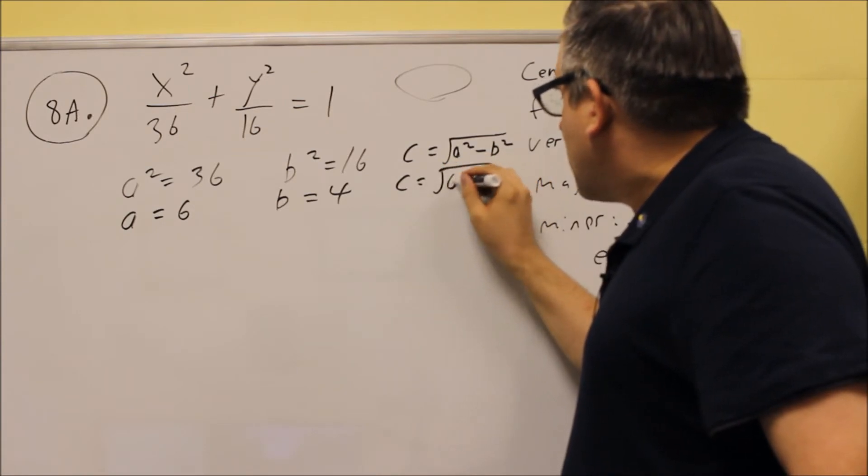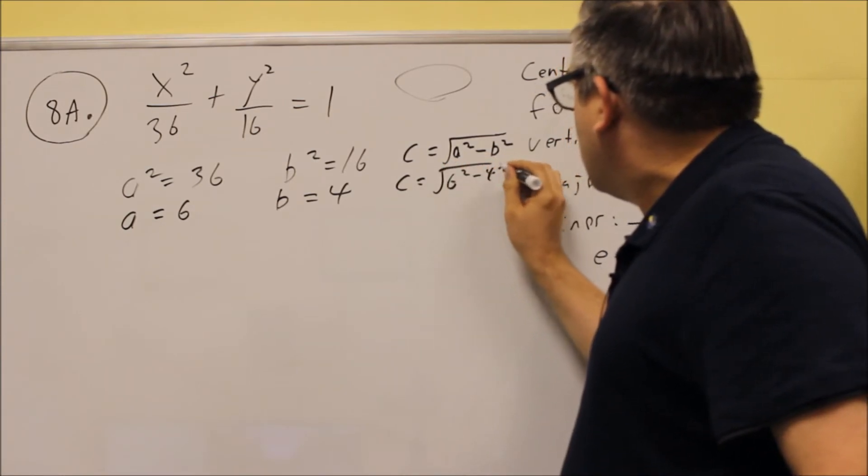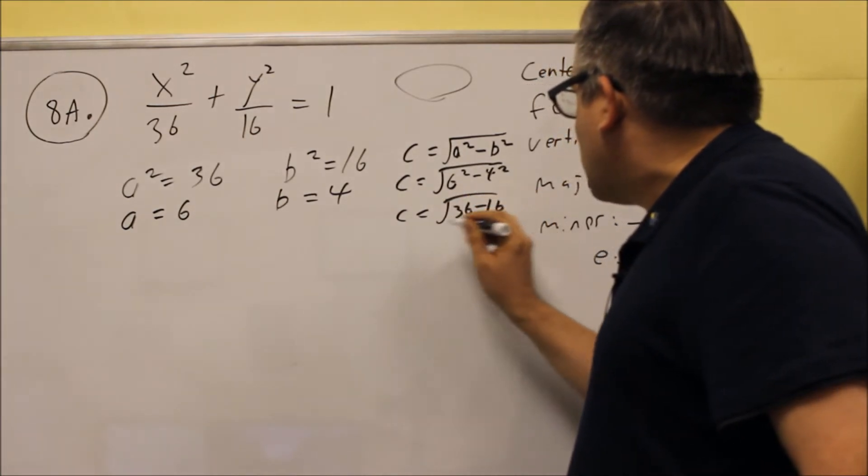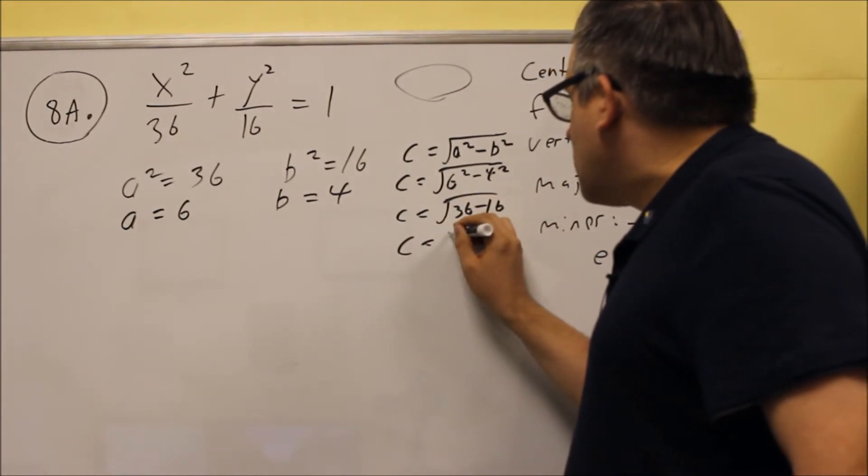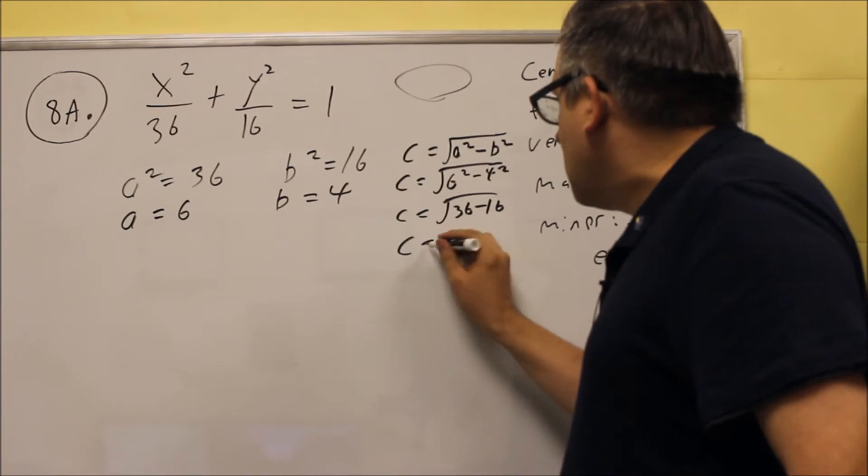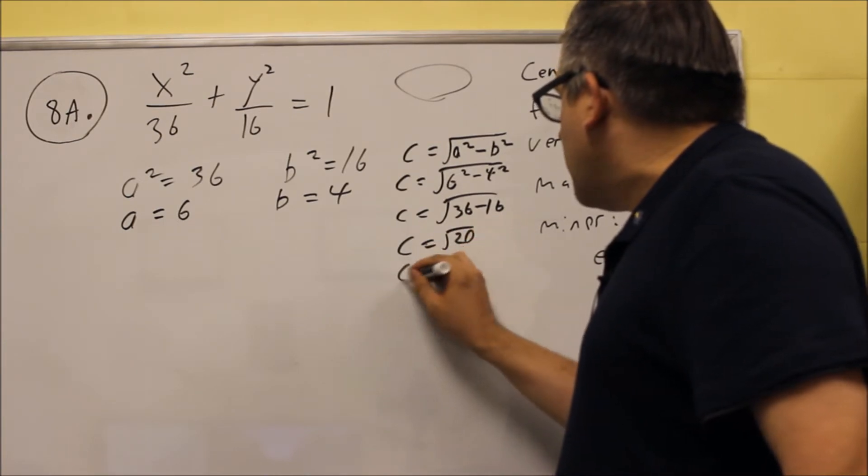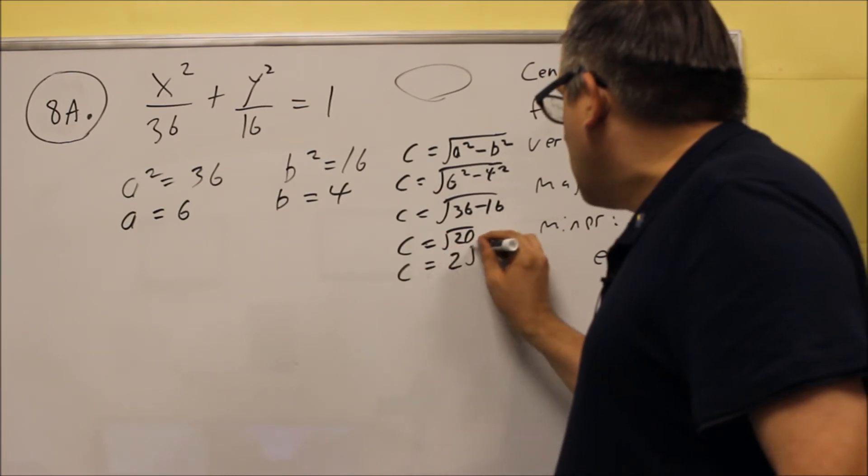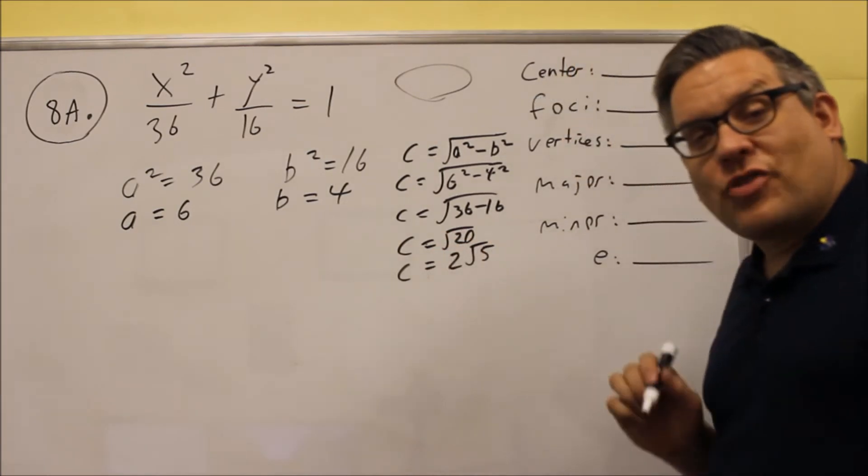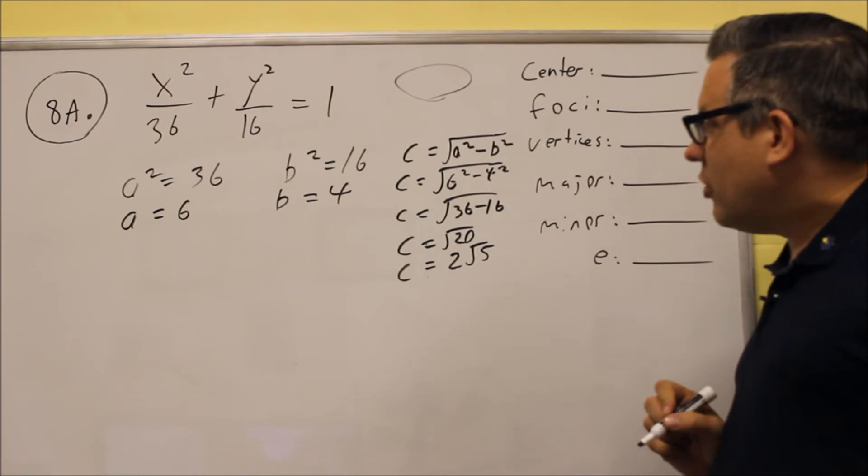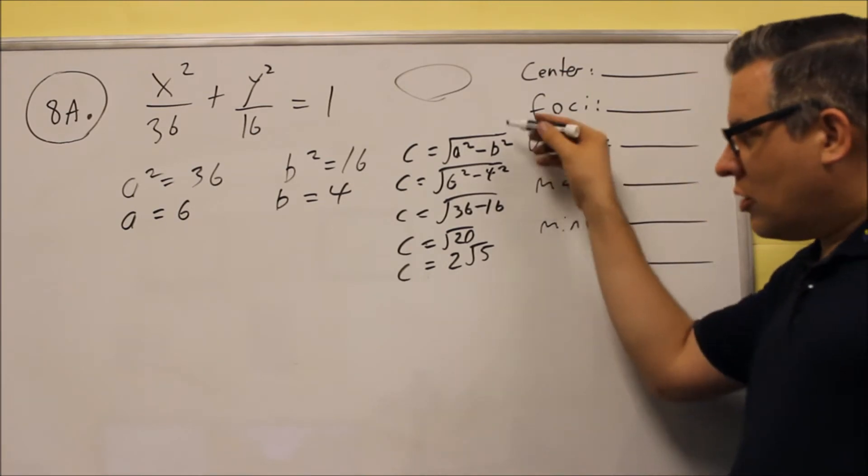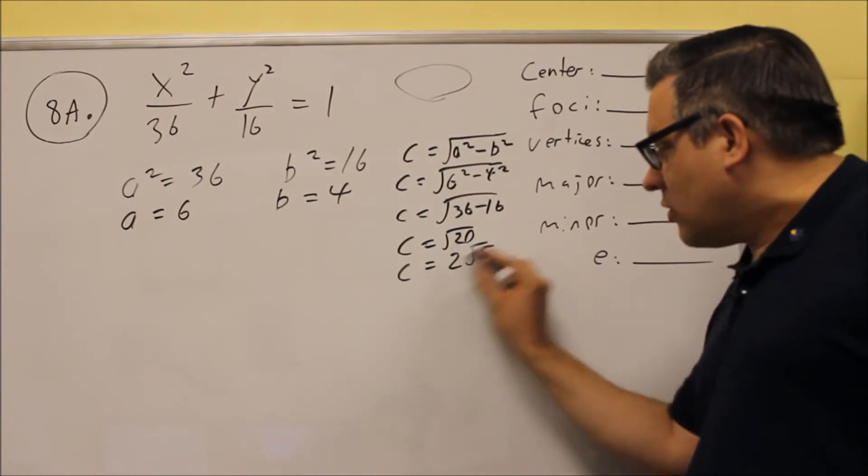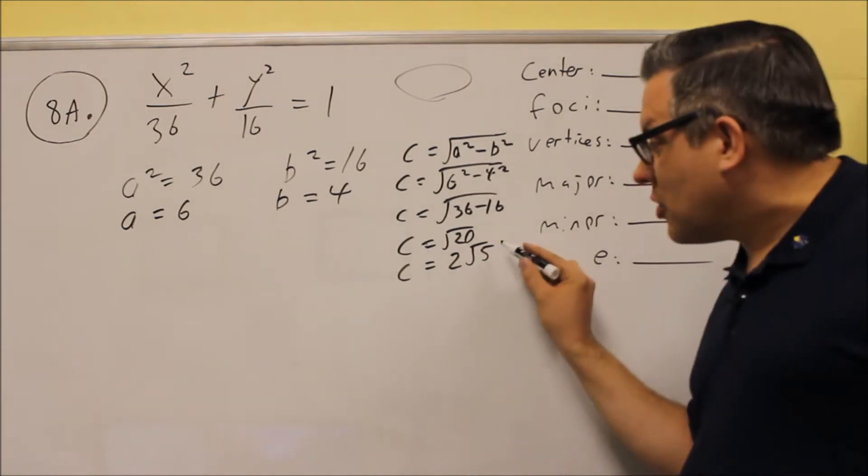So when we put that in, we get 6 squared minus 4 squared, which is going to be 36 minus 16, which is the square root of 20. And the square root of 20 can also be written as 2 square root of 5. So 4 times 5, square root of 4 will come out, and you get this. So this is all the work we can show to get the value for c. You want to get down to this simplified version here as much as you can.